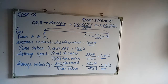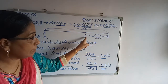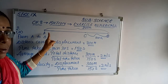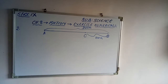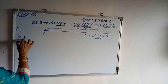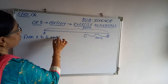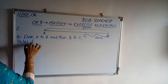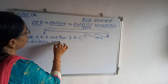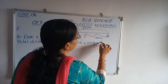Second question: from A to B then B to C. We need the total distance covered. A to B is 300 meters, B to C is 100 meters, so the total distance covered is 400 meters. Now, the displacement is AC, which equals AB minus BC: 300 minus 100 equals 200 meters.